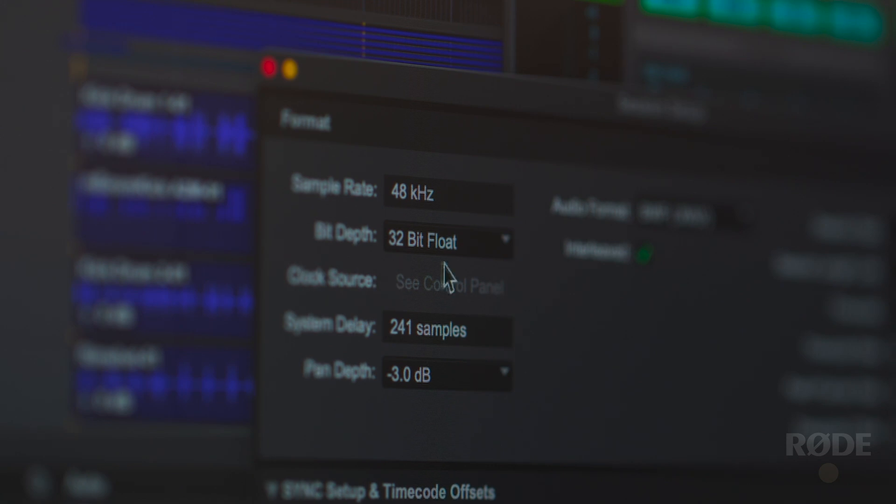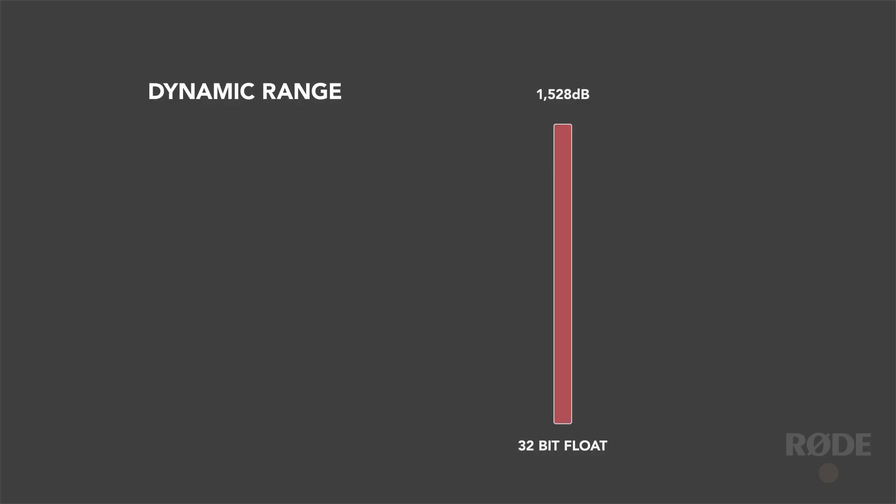It is an incredibly useful feature that allows you to record the full dynamic range of the microphone, and then you have the flexibility to set your audio levels after recording. This means that you don't need to worry about setting your gain before recording to avoid clipping, and if your audio does clip you can simply set it to the ideal level afterwards to remove the distortion. To learn more about 32-bit float recording, how it works and why it's useful, check out the video in the link below.